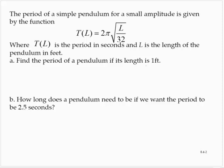Find the period of a pendulum if its length is 1 foot. So length is 1 foot. We're asked to find the period, so T(1) would equal 2π times the square root of 1 over 32.